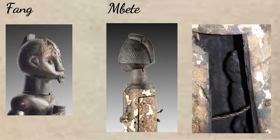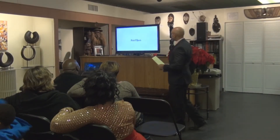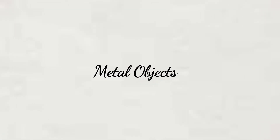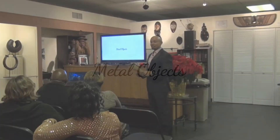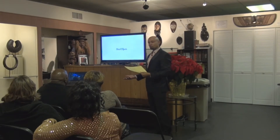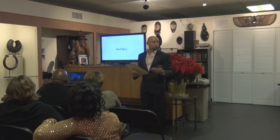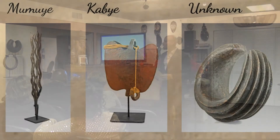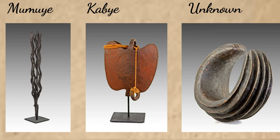Some examples here come from the Fang people of Cameroon and Equatorial Guinea. The third category of sculpture we wanted to discuss this evening were metal objects. These may be designed as jewelry or as sculpture, but their actual purpose is to be transported and traded. Jewelry form is often used because it can be worn and is therefore easier to transport for trade. We have examples here from the Mamouye, the Kabye, and this one of unknown origin, which is actually one of my personal favorites.